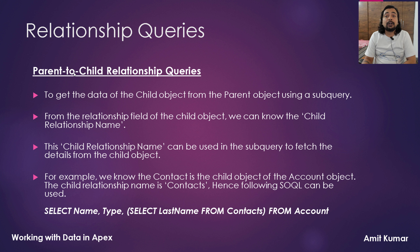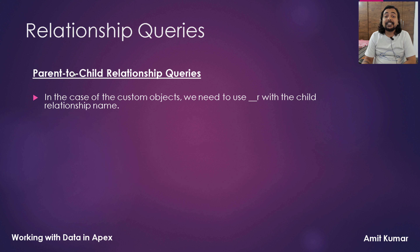For example, we know that Contact is the child object of the Account object and the child relationship name is Contacts. Hence the following SOQL query can be used: SELECT Name, Type, (SELECT LastName FROM Contacts) FROM Account.